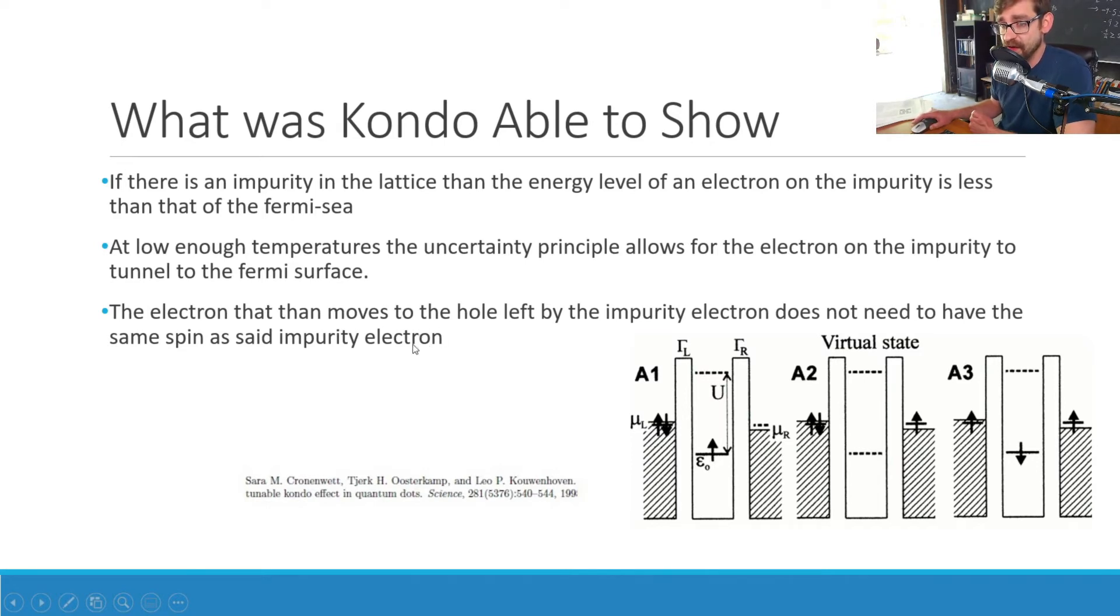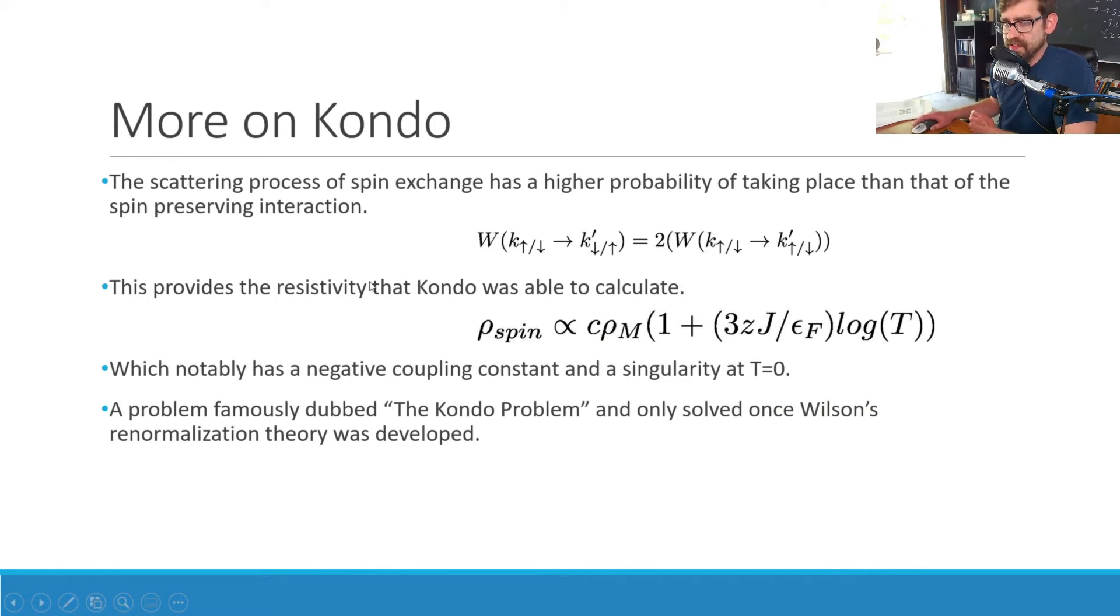Now, what would end up happening is that this electron that was here, that would tunnel through the wall, would be replaced by an electron in the S orbital. The electron that replaced, or that went into the hole, did not have to have the same spin. Notice how this is one of the many options that are available for this interaction to happen, where we have the electron hop through the wall and then get replaced. This is one of the interactions where the electron has the opposite spin. So there's interesting things about that because the scattering process for the spin exchange has actually a higher probability of taking place than that of the spin-preserving interaction. It was actually twice as high that a spin-exchanging interaction were to take place than a spin-preserving interaction.